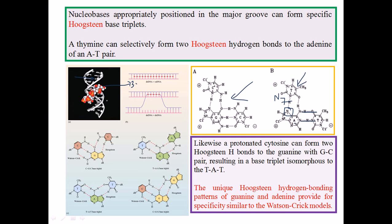The unique Hoogsteen hydrogen bonding patterns of guanine and adenine provide specificity similar to Watson-Crick. The specificity remains the same, so it does not hamper the complementary nature of the DNA or the interactions of the double strands, yet this kind of triple-stranded DNA can still form.